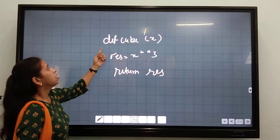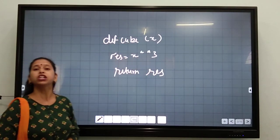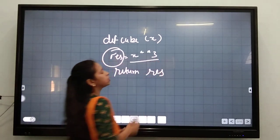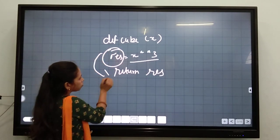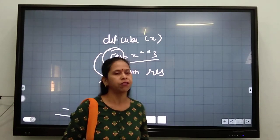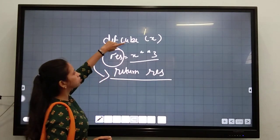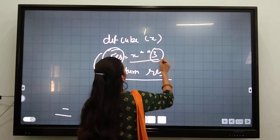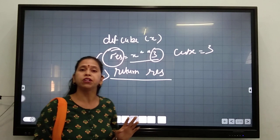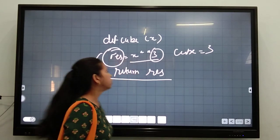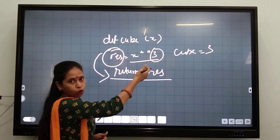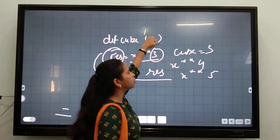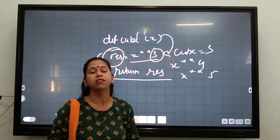Here is another function: a cube function. In the cube function, I have passed one parameter x, and then given a variable RES which is x multiplied by 3. So this function also gives a return value — it returns RES. The cube value is 3, so it is multiplied by 3. If it were SQRT, it would be x to the power 2. Whatever power you want — x to the power 4, x to the power 5 — you write the parameter followed by the power number.